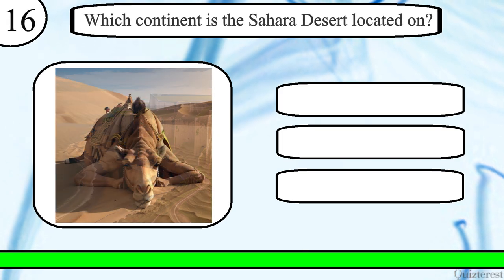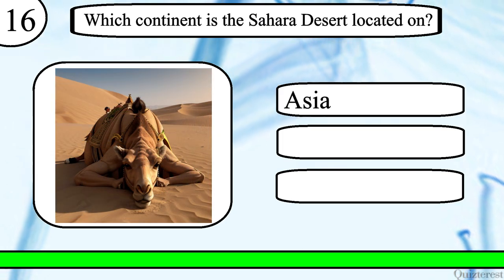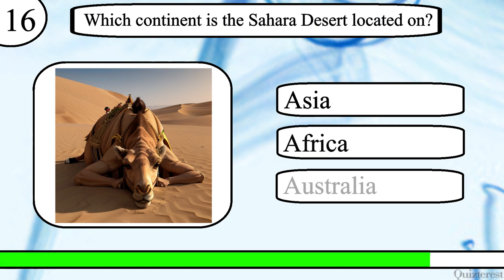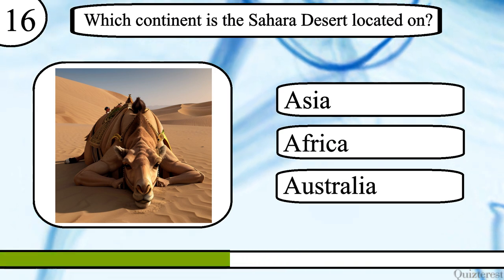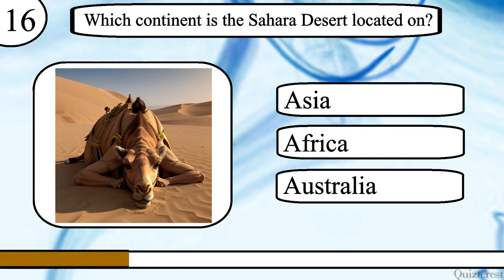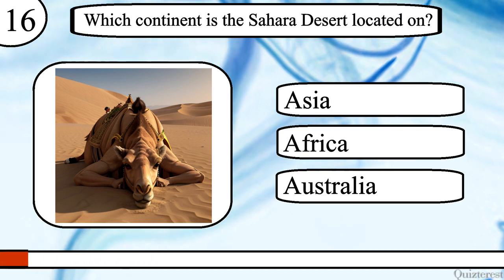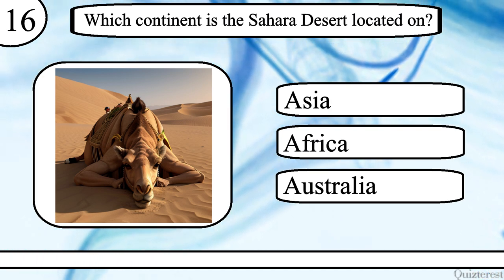Question 16. Which continent is the Sahara Desert located on? Asia, Africa or Australia? The correct answer is Africa.